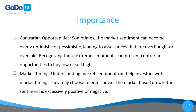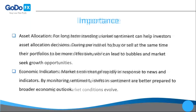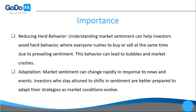Fifth, asset allocation — for long-term investors, knowing market sentiment can guide asset allocation decisions. During periods of high optimism they may adjust portfolios to be more defensive, while in bearish sentiment they may seek growth opportunities. Sixth, economic indicators — market sentiment often reflects and influences economic indicators, giving investors insights into the broader economic outlook.